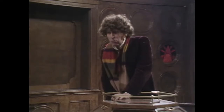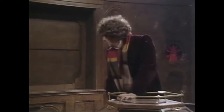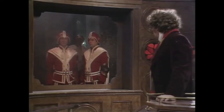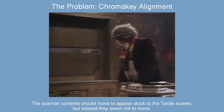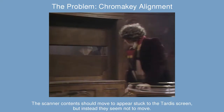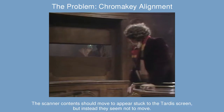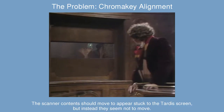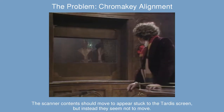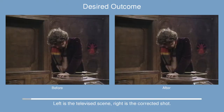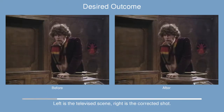There's a special effect problem here: the scanner screen has some chroma key on it, and the camera inside the TARDIS is swinging around to look at that screen, but the imagery being put onto that chroma key is actually from a camera that hasn't moved. So the viewer can see that the camera hasn't moved and the imagery is actually static with respect to the television screen the audience is watching.